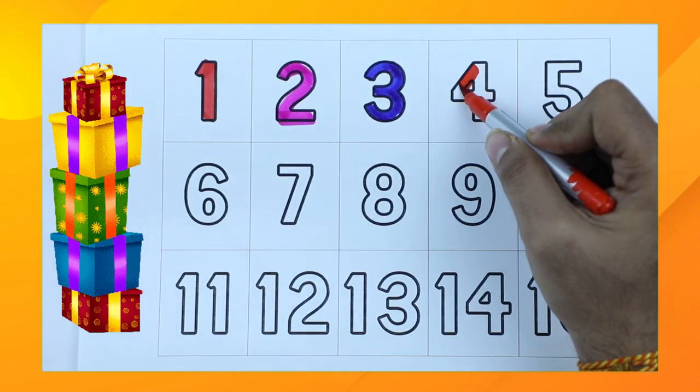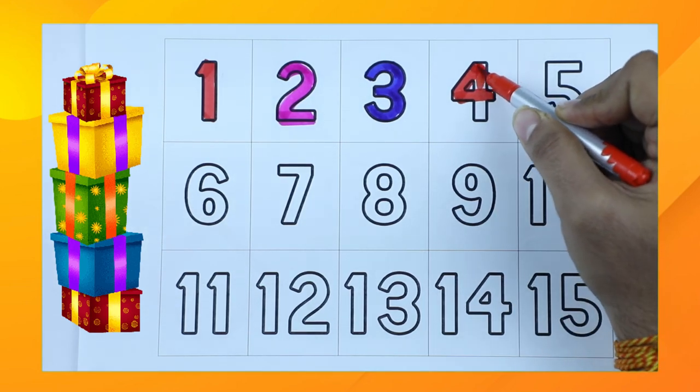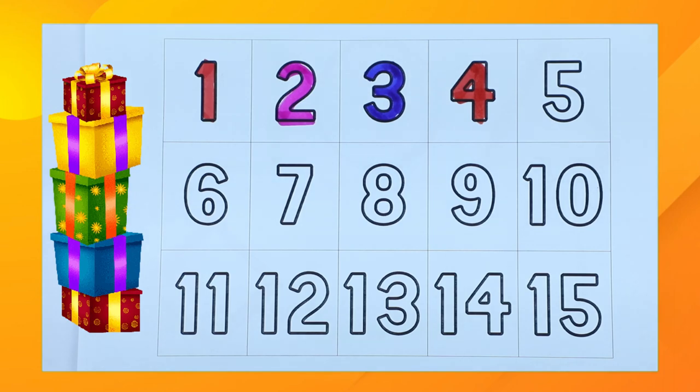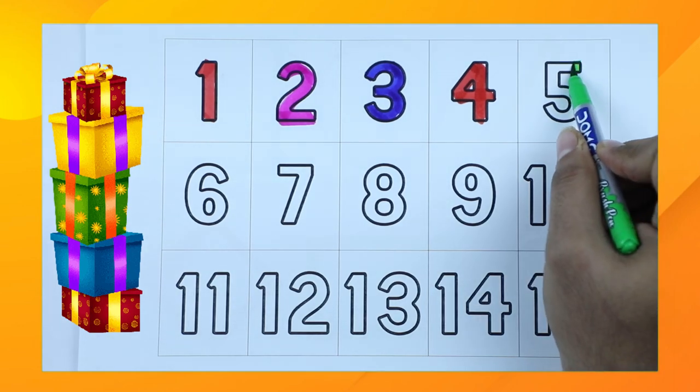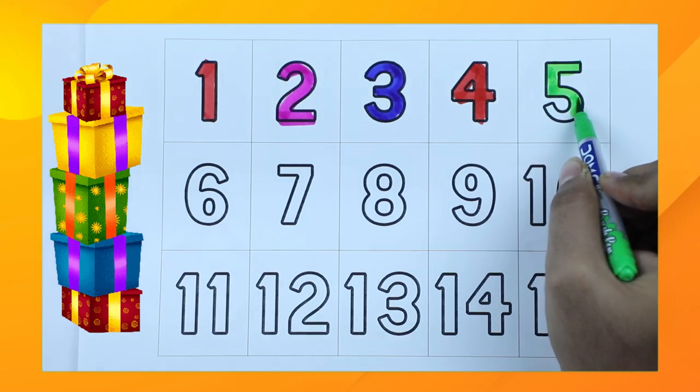Number 4. Number 4 is red color. It's number 4. Now we make number 5. It's number 5.